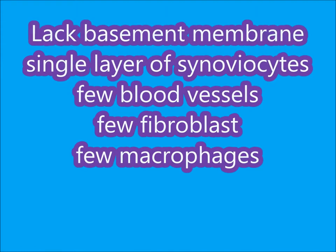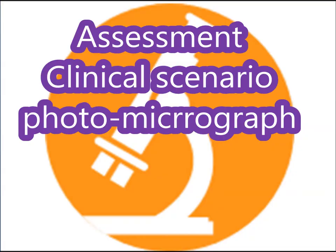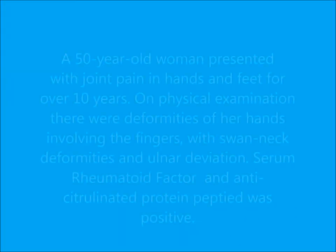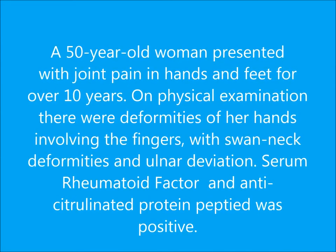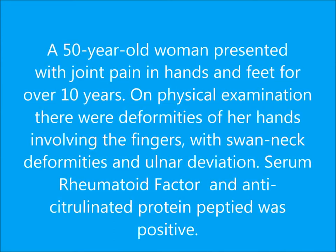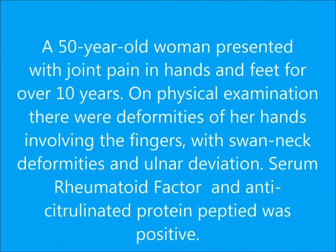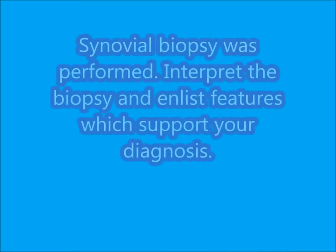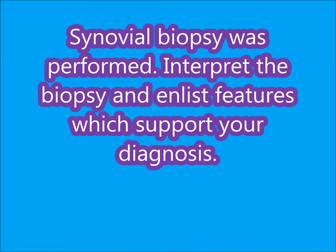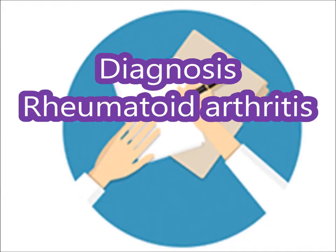In the assessment, there is a clinical scenario along with a photomicrograph. The clinical scenario is: a 50-year-old woman presented with joint pain in hands and feet for over 16 years. On physical examination, there were deformities of her hands involving the fingers. Blood tests showed rheumatoid factor and anti-citrullinated peptide antibodies positive. A synovial biopsy was performed.